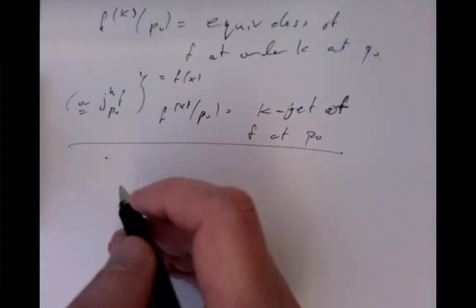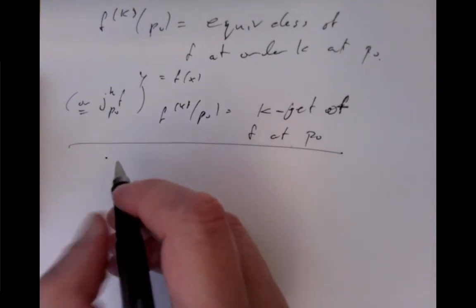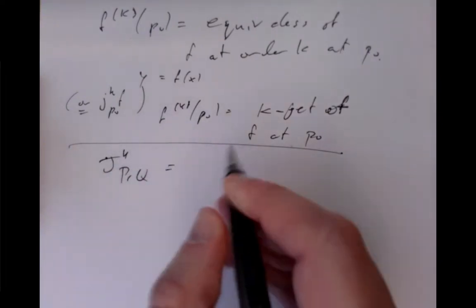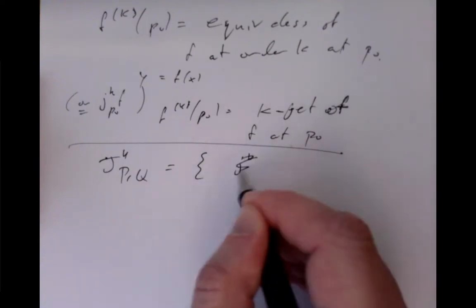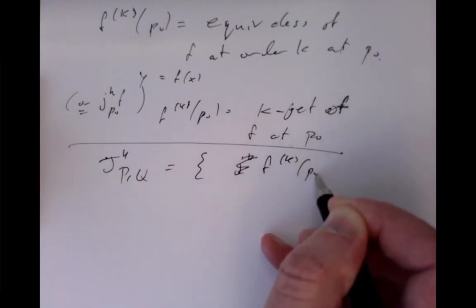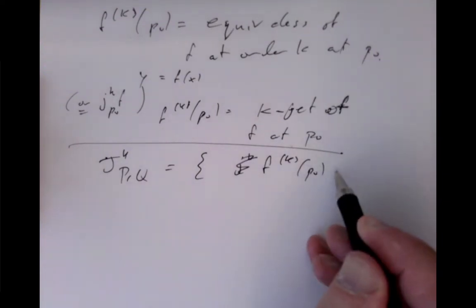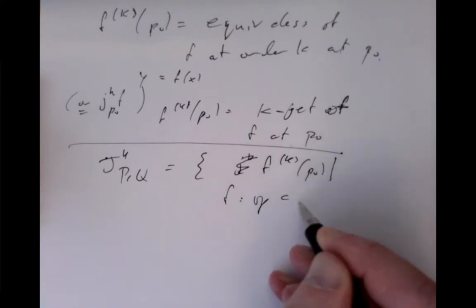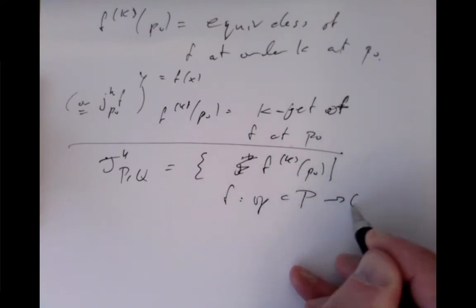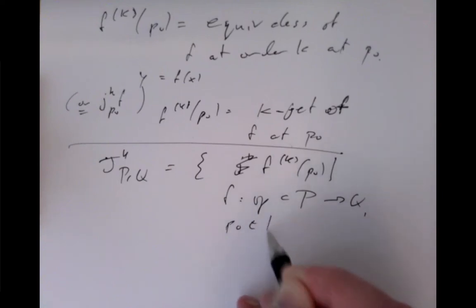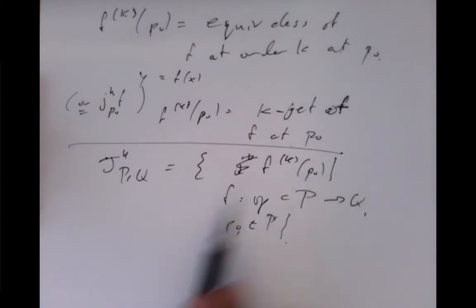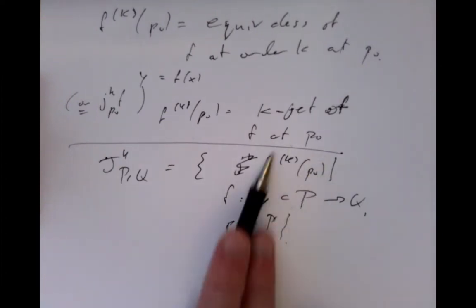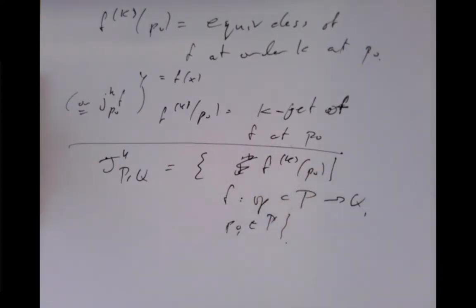The jet bundle, written J^k(P, Q), is the set of all K-jets at P₀, for all maps f taking some open subset of P to Q, with P₀ lying in that subset. It's the set of jets of all mappings — they don't have to be globally defined; locally defined mappings are fine, since we only need to calculate Taylor series expansions near a point.